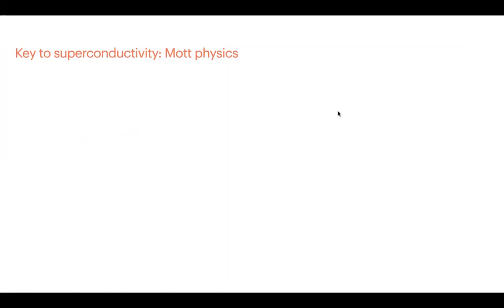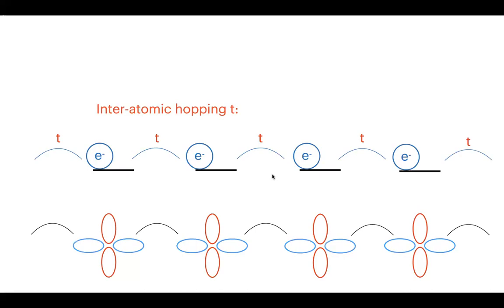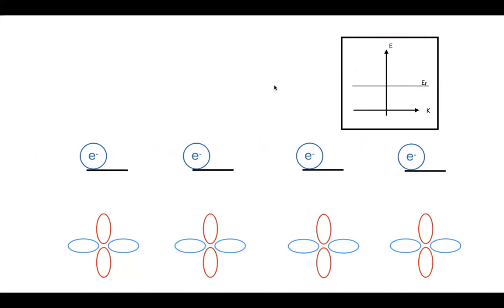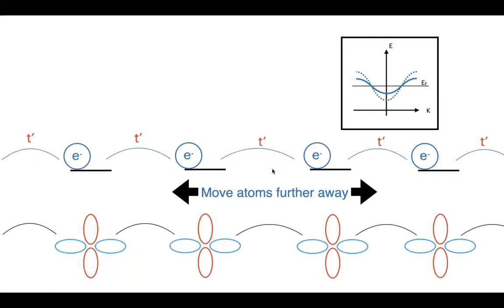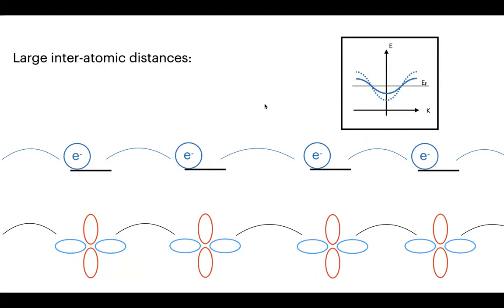Key to superconductivity is Mott physics. Consider a 1D chain of atoms with one electron per orbital per atom and some hopping t between orbitals. You'd say this is a simple metal — a half-filled band where electrons can hop. If you move atoms further apart, reducing hopping from t to t', the system should become an insulator. The question is: how does that happen?